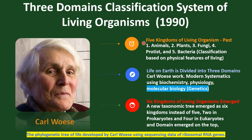For example, the classical living classification system had five kingdoms, including: one, Animals; two, Plants; three, Fungi; four, Protists; and five, Bacteria. This classification system was based on the physical features of living organisms. The Carl Woese classification system led to six kingdoms of living organisms, with a major change being that domains emerged at the top of the hierarchy, instead of kingdoms.